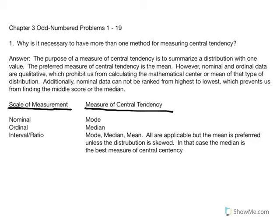Chapter three odd number problems. Number one: why is it necessary to have more than one method of measuring central tendency?